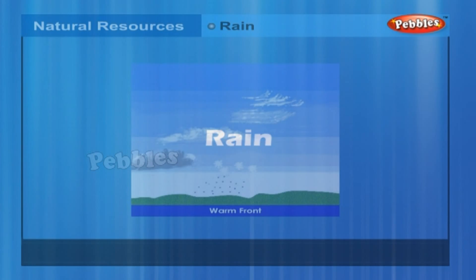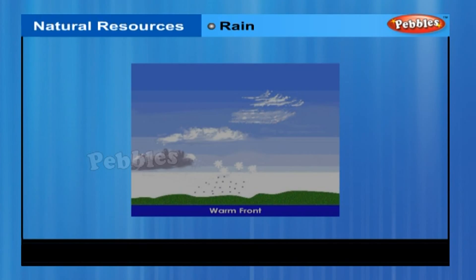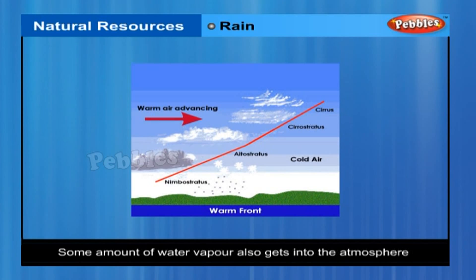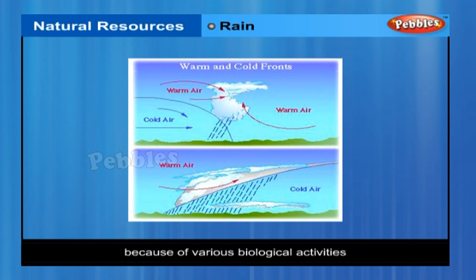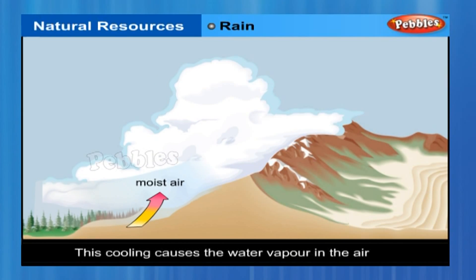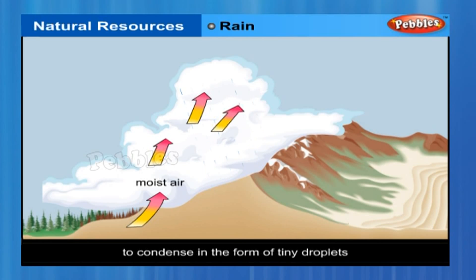Rain. When water bodies are heated during the day, a large amount of water evaporates and goes into the air. Some amount of water vapor also gets into the atmosphere because of various biological activities. This air gets heated up, and the hot air rises, carrying the water vapor with it. As the air rises, it expands and cools. This cooling causes the water vapor in the air to condense in the form of tiny droplets.